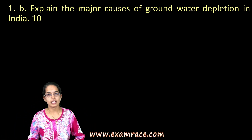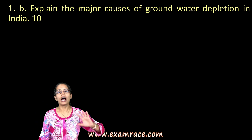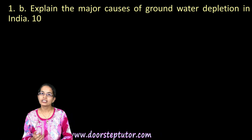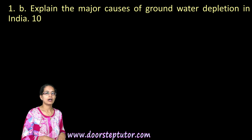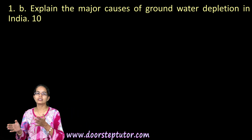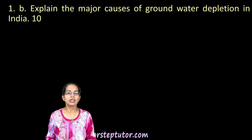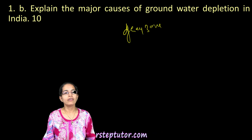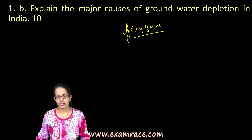Groundwater depletion — one of the major causes is a lot of subsidies on electricity and higher minimum support price for water-intensive crops, resulting in a lot of utilization of water in agricultural regions. Beyond that, contamination and pollution damage to underground regions causes groundwater depletion to increase. With increasing heat waves, the issue has further deepened in urban areas. The gray zones are areas of acute crisis of underground water where, if there is no ample rainfall, recharge becomes difficult.